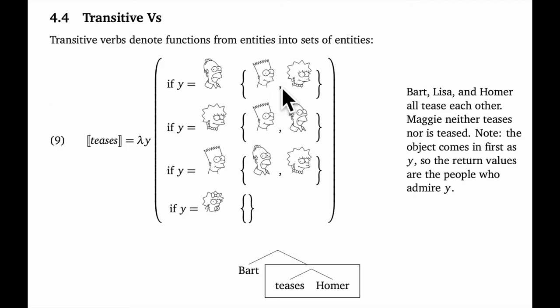I have to emphasize that because it might feel backward at first. The first argument is the direct object. It comes in and then we get a set of entities. As with intransitive verbs, when we do get a subject, we'll test whether the subject meaning is a member of the set that the verb phrase denotes. So for example, Bart teases Homer will come out true in our model because Bart is in this set here, whereas Maggie teases Homer will come out false because Maggie is not in this set here.